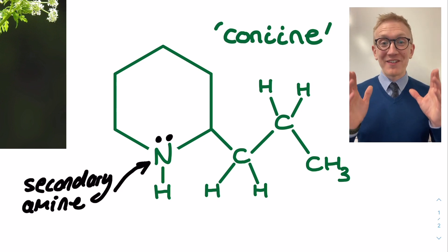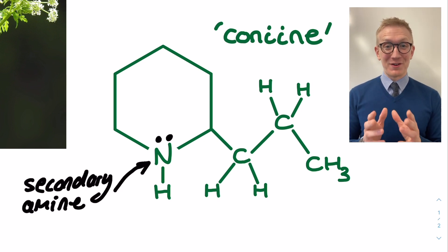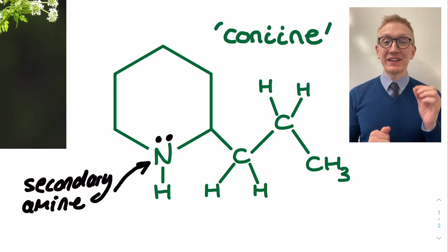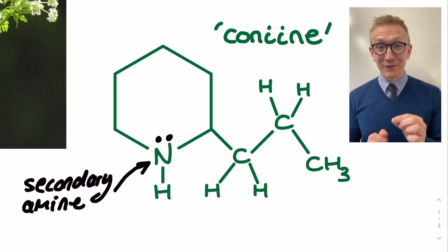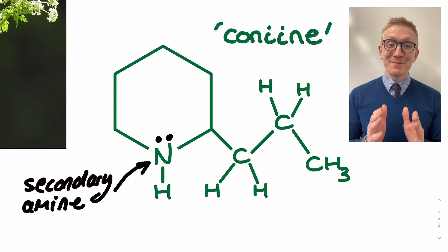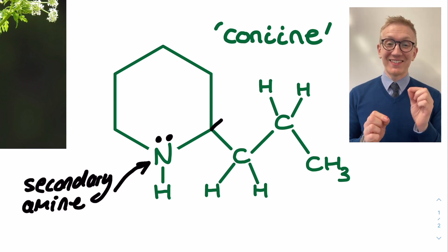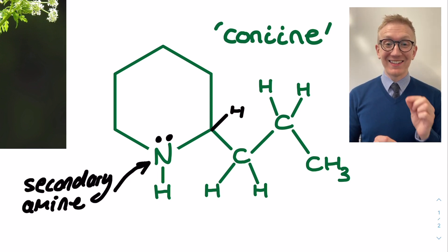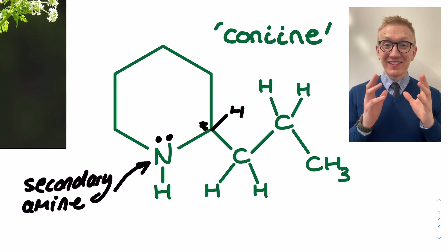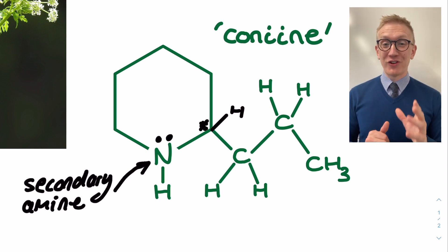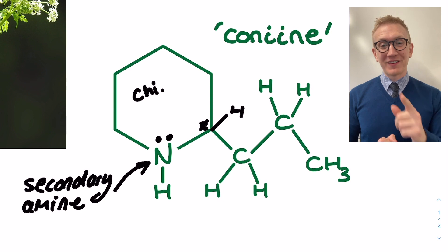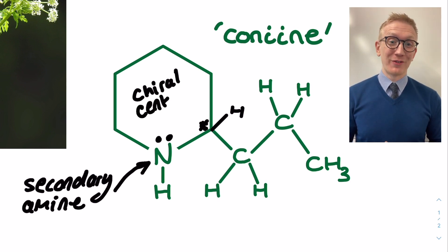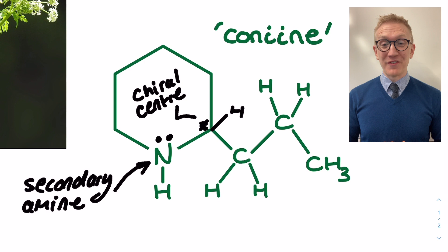We also have a chiral centre on our molecule. A chiral centre is when a carbon atom is bonded to at least four different atoms or groups. Even better, this chiral centre is an example of one which is on an unsymmetrical alicyclic ring. Now these are quite difficult to spot when shown in skeletal formula, and I've got a separate tutorial video on just this type of chiral centre if you'd like to look into this even further.